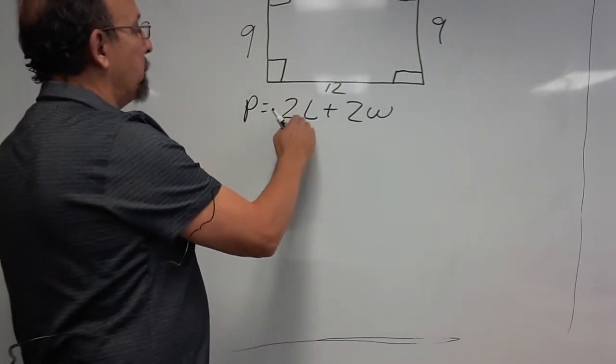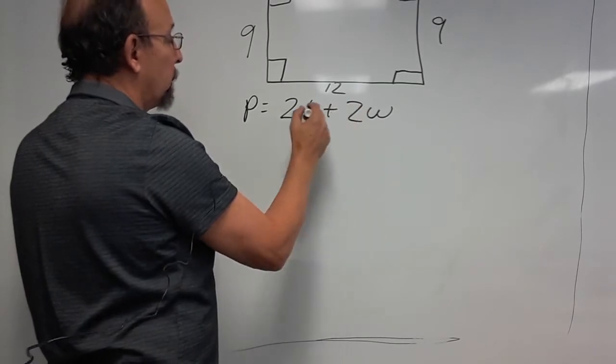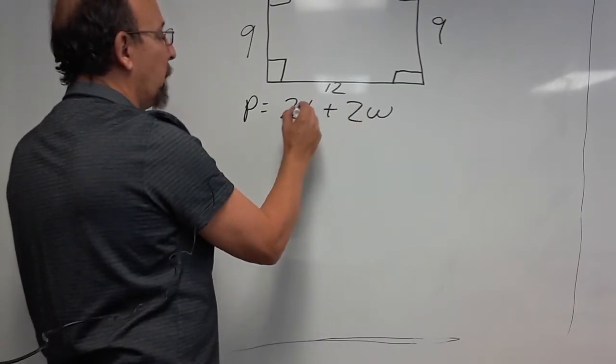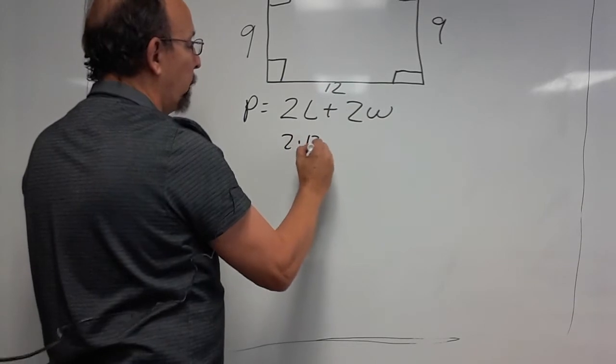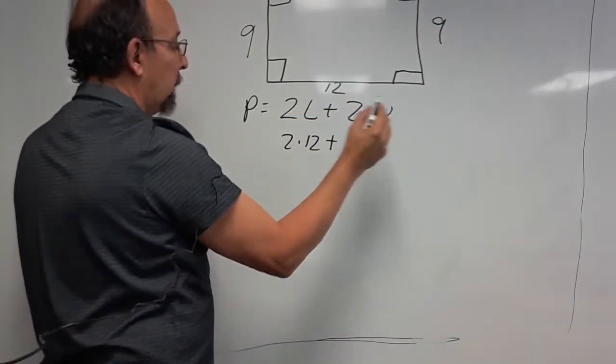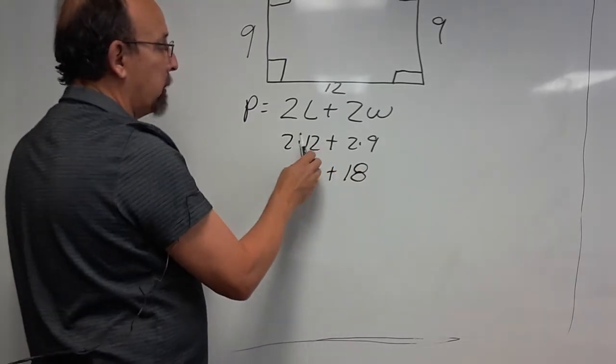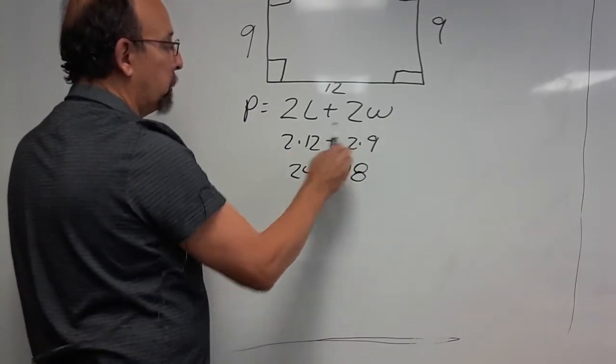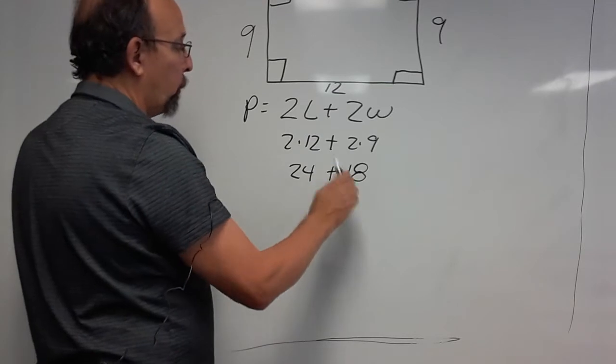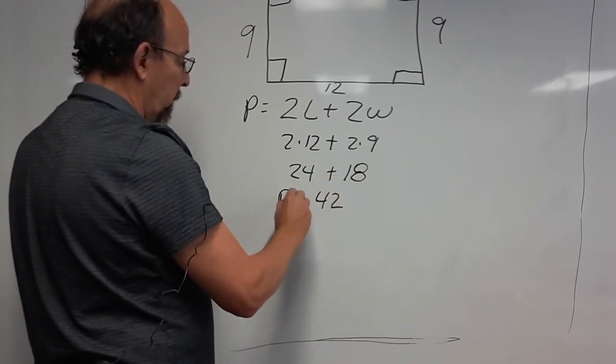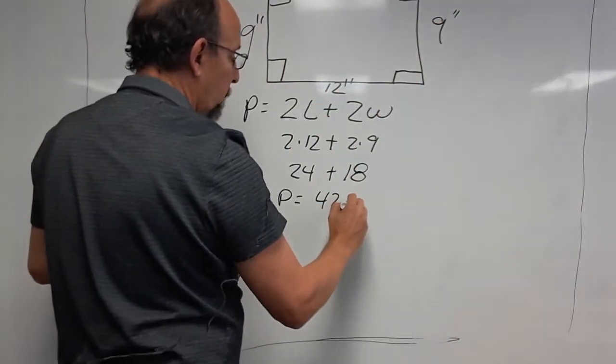So we're going to say 2 times the length plus 2 times the width. The length, 2 of those. The width, 2 of those. So you fill in the numbers. Remember that no sign between a letter and a number always means multiplication. You're going to take 2 times the length, which is 2 times 12, plus 2 times 9, which is the width. You're going to multiply that. You're going to get 24 plus 18. Remember that you do your multiplication before your addition and subtraction. Now you're going to add those up and you're going to get what? You're going to get 42. 42 is the perimeter. Perimeter equals 42. And in this case, we'll say it's inches. So it's 42 inches.